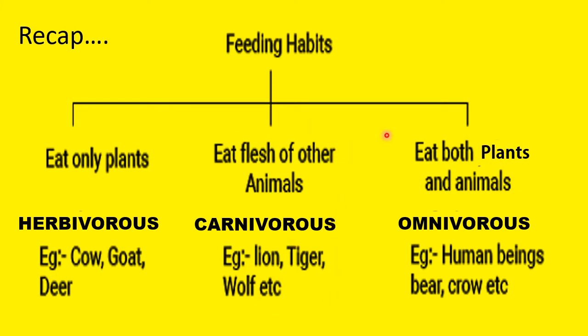Animals which eat both plants and animals are called Omnivores. For example, human beings, bear, crow, etc. They are the examples of Omnivores.